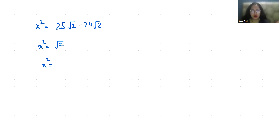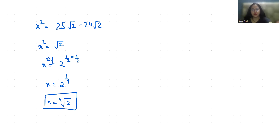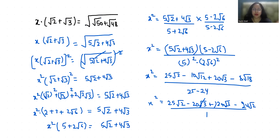Since x² equals 2^(1/2), to isolate x I'm going to multiply the exponent by 1/2 on both sides, so x equals 2^(1/4), or x equals ⁴√2. I hope it's clear and you find it useful, so please give a thumbs up and subscribe to my channel. Stay tuned.